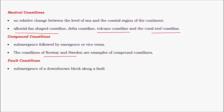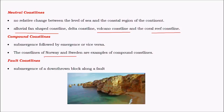Compound coastlines are where both submergence and emergence take place. These are mostly found in the coasts of Norway and Sweden. Fault coastlines are very rare — where a block is upthrusted or undergoes subsidence, giving rise to a fault coast. A block may be uplifted or it can subside, and the neighboring block can subside, giving rise to a fault coastline.